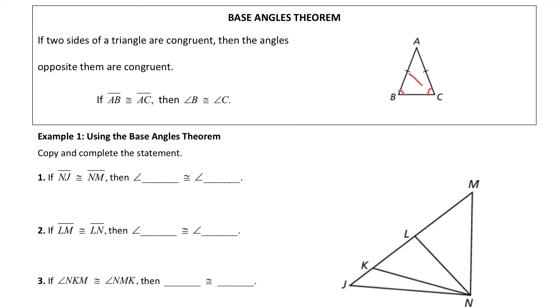Because C is across from this side, opposite from this side, and B is opposite from that side. So those two angles are congruent in the isosceles triangle.